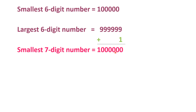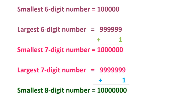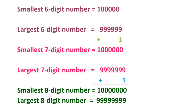The smallest seven digit number is ten lakh and the largest seven digit number is 99,99,999. So all seven digit numbers come between 10 lakh and 99,99,999. Similarly, when we add one to the largest seven digit number we get the smallest eight digit number, that is one crore. The largest eight digit number is 9,99,99,999.